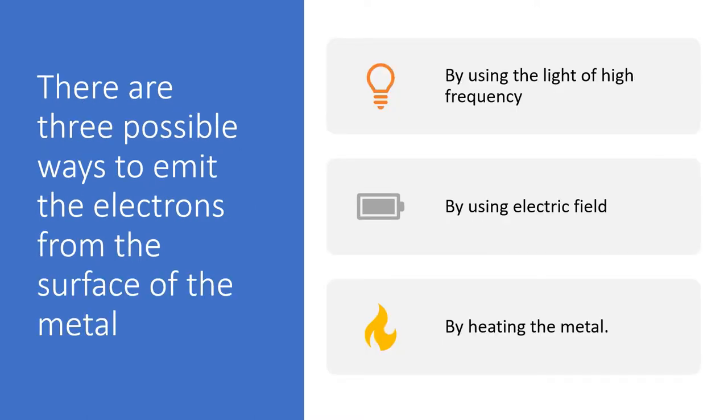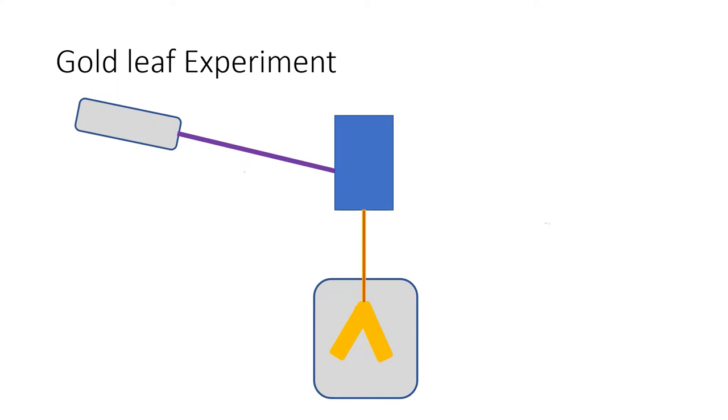There are three possible ways to emit the electrons from the surface of metals: by using light of high frequency, by using an electric field, or by heating the metal. This is a simple setup.